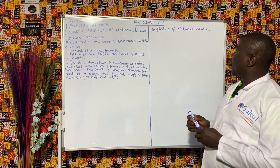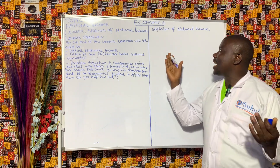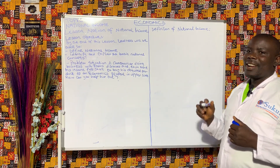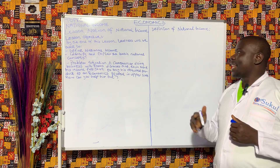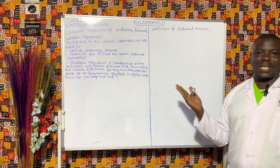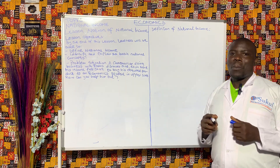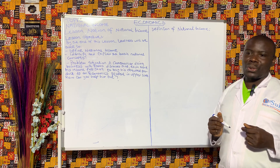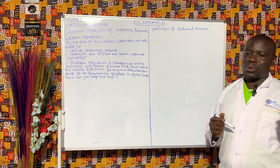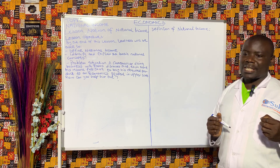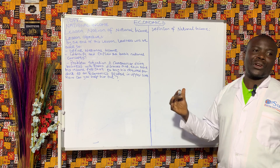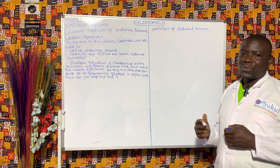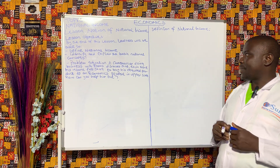We kick off by looking at the definition of national income. National income is the total monetary value of goods and services produced using a country's own resources over a given period of one year, after allowance for depreciation has been made.